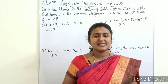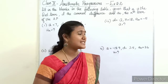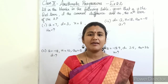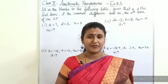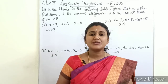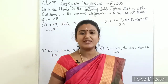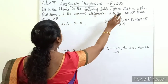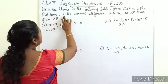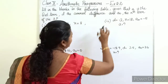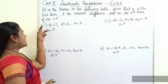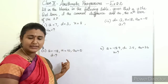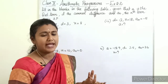Hello students, welcome to my class. In today's class we will continue the chapter Arithmetic Progressions of Class 10. In my previous video we learned the formula for finding the nth term of an AP. Today we are going to do Exercise 5.2. The first question asks us to fill in the blanks in a table, where a is the first term, d the common difference, and a_n the nth term of the AP. There are five sub-questions, and in each one a different value — either a, d, n, or a_n — is missing.